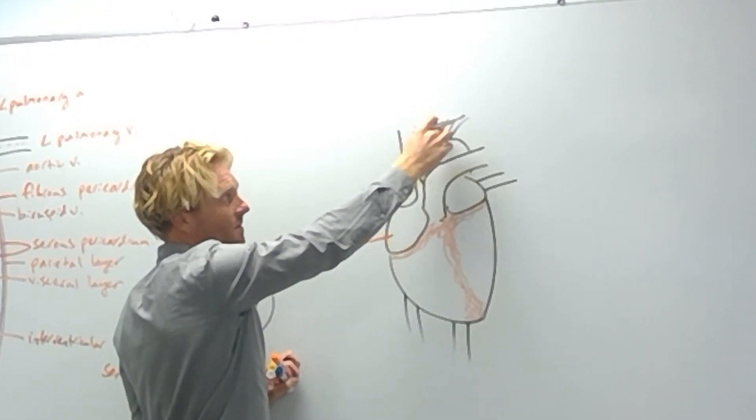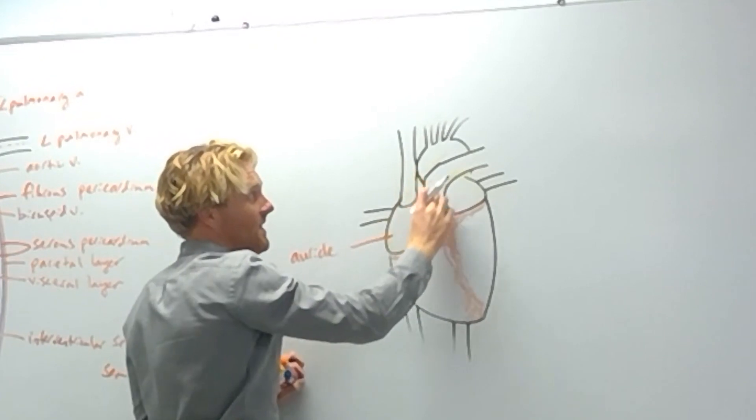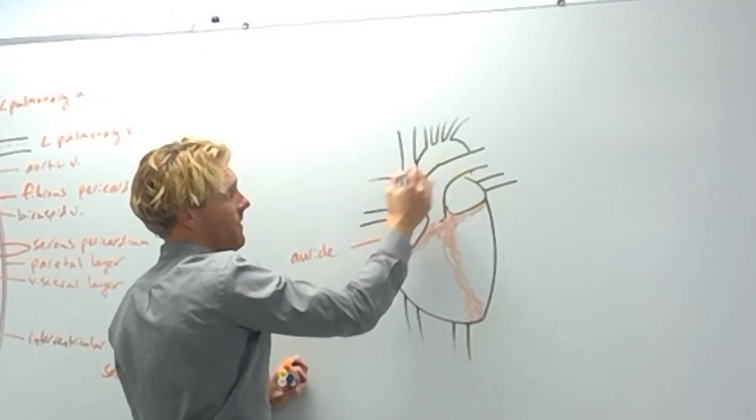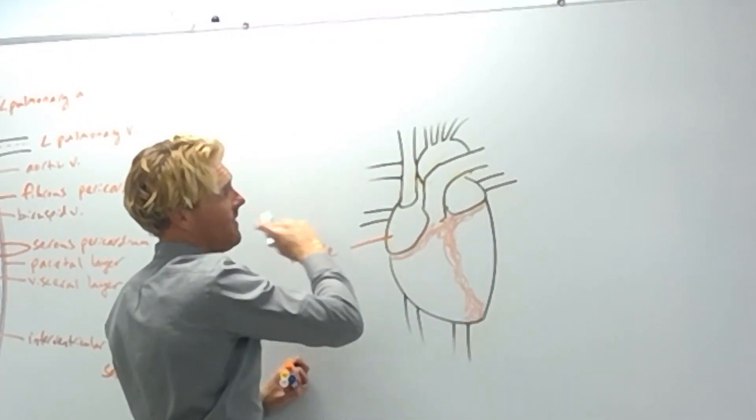Great disciplinary trunk, left common carotid, left subclavian. This vessel, what is that? It's a left pulmonary. Left pulmonary, and then right over here is the right pulmonary.